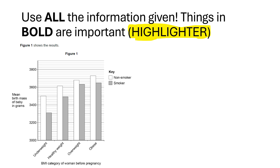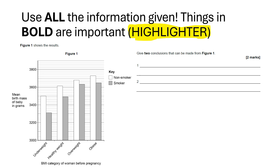So for example, figure one shows results of looking at non-smokers and smokers and the BMI category of a woman before pregnancy and the mean birth mass of the baby in grams. Give two conclusions that can be made from figure one.